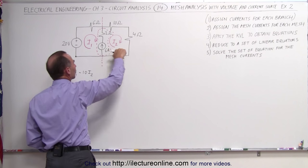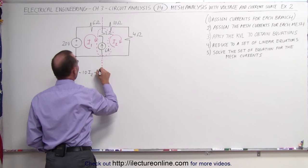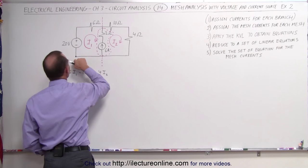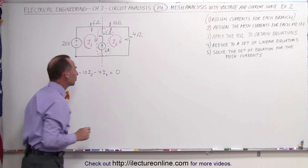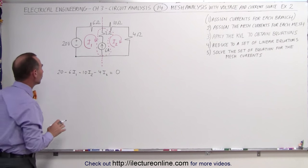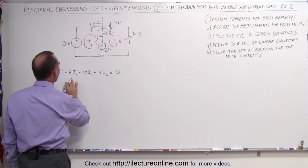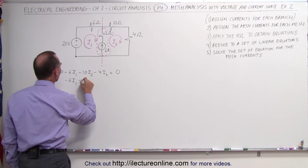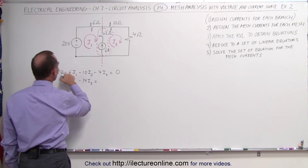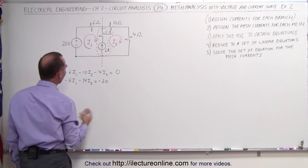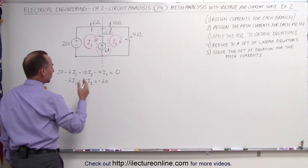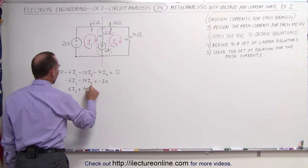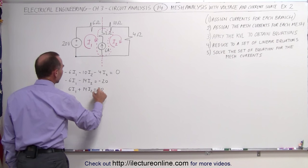Because here we're dealing with mesh current I2, and here we have another voltage drop, minus 4 times I2, and then we come all the way around back to the original starting point, that must add up to zero. Combining currents, moving the voltage over to the other side, we can say that this is minus 6 I1 minus 14 I2 equals minus 20, and since everything is negative, I can just multiply both sides by negative 1. This gives us 6 I1 plus 14 I2 equals 20.